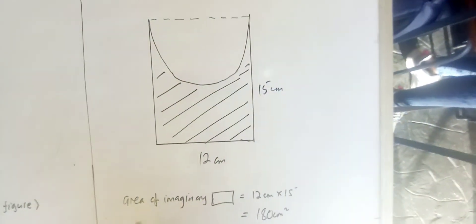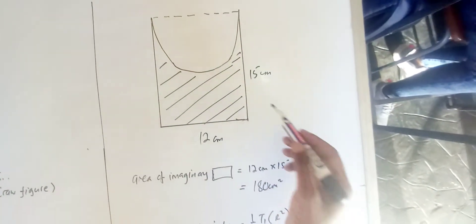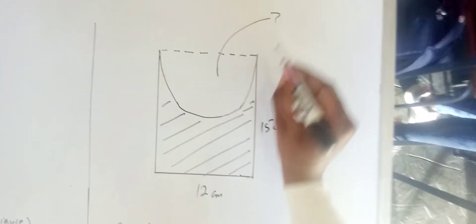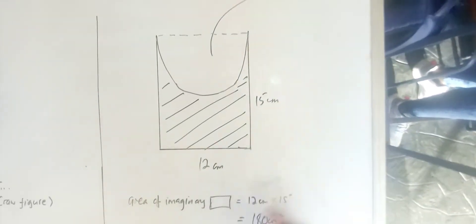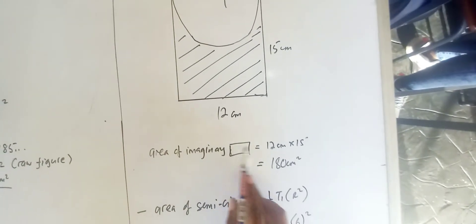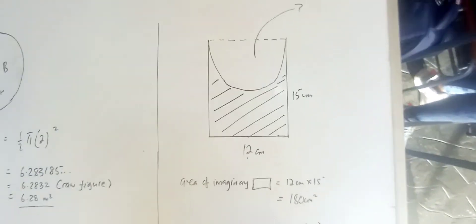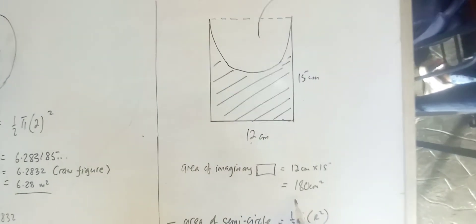As a result, you end up having an imaginary rectangle entirely. You can see that a shape of a semicircle has been cut out from this template. So you can then say area of imaginary rectangle, which will give you 12 by 15, and that would amount to 180 square centimeters.